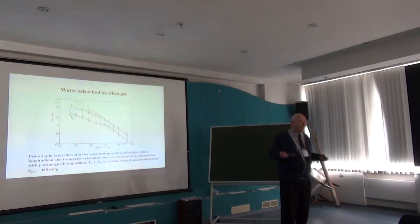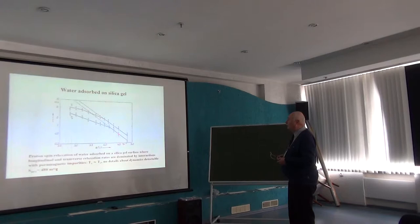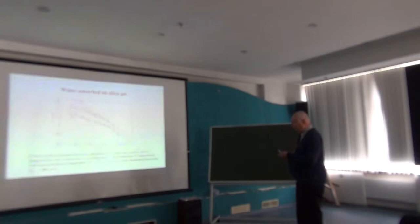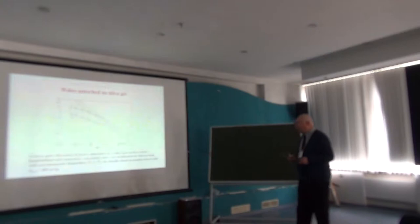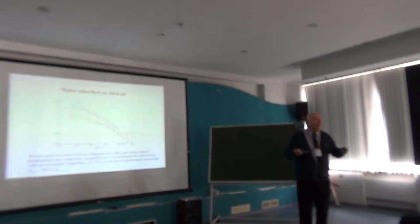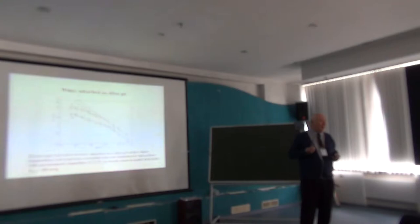We have relaxation times which are on the order of magnitude of some milliseconds. Even for restricted water, this order of magnitude is completely wrong. Furthermore, we have no great difference between T1 and T2, and we have a strange temperature dependence. We could not understand the behavior of the water molecules. You find a lot of publications with such curves, but I believe they are completely wrong.